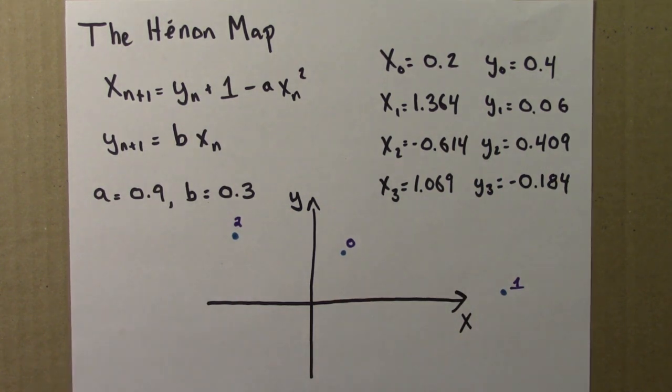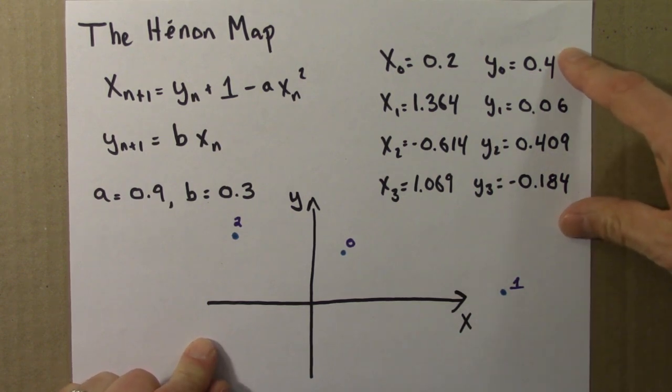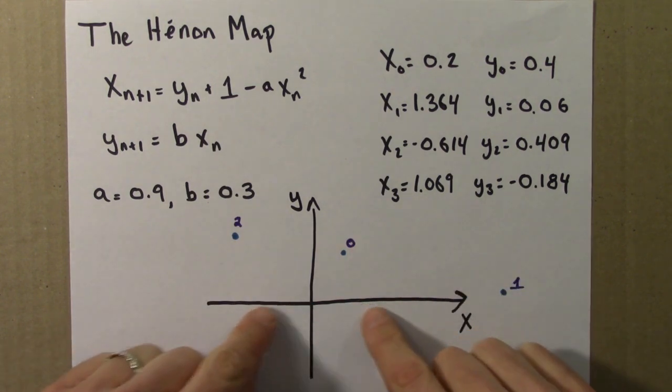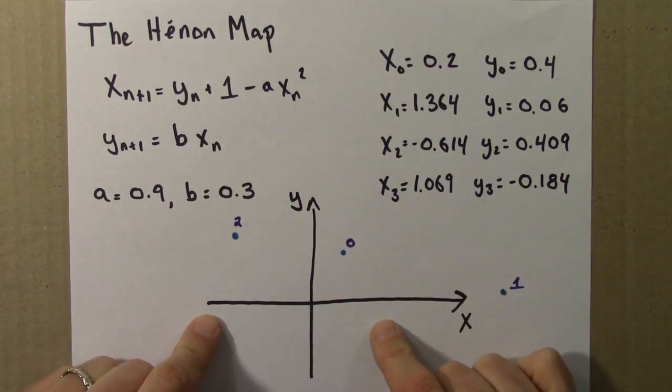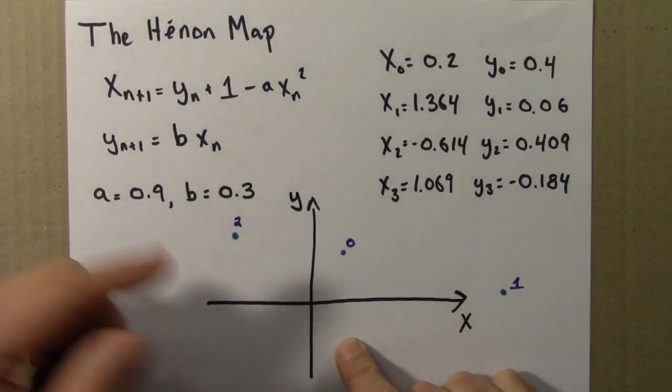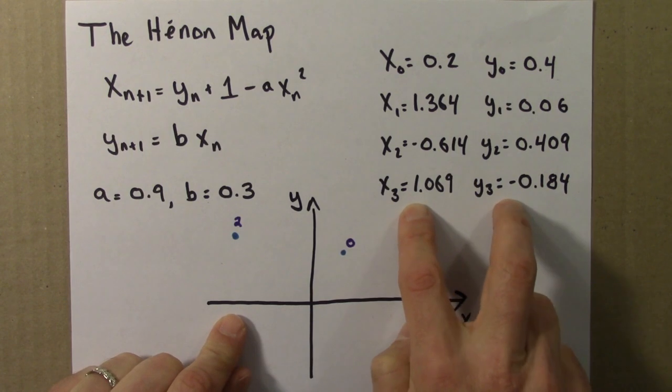If I wanted to know just the long-term behavior, I might iterate for 10 or 100 times, not plot those, but then plot the next 100 or something like that. So this is very similar to what we did for the final state diagram for the logistic equation. But now instead of a line, we have a plane. We have a plane because we have two numbers, two coordinates, not just one.